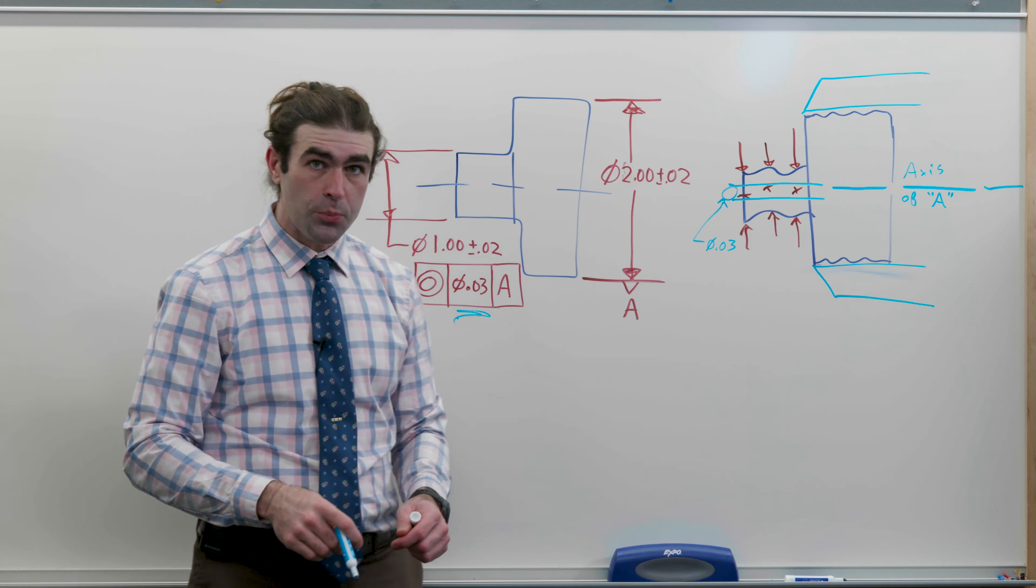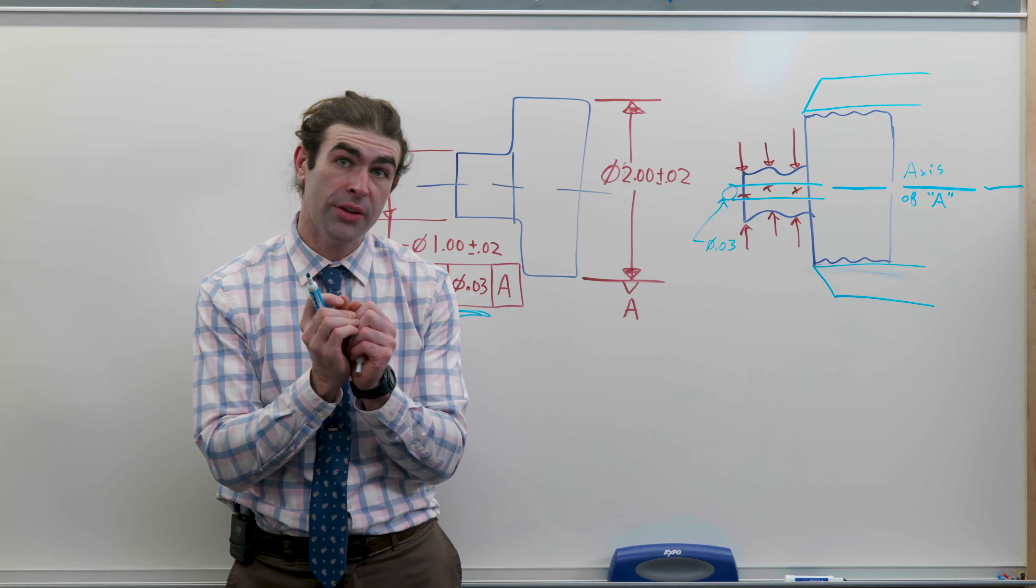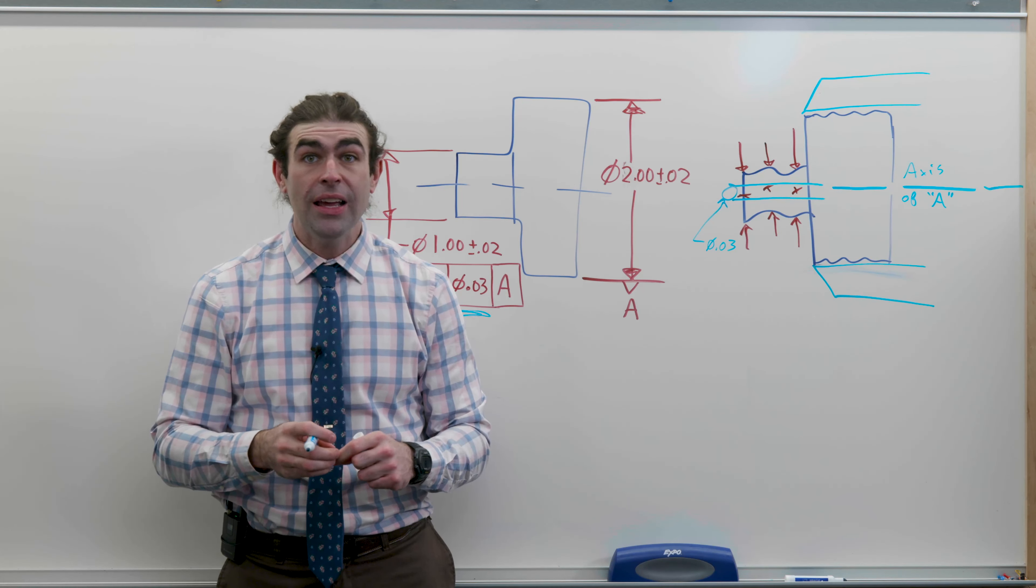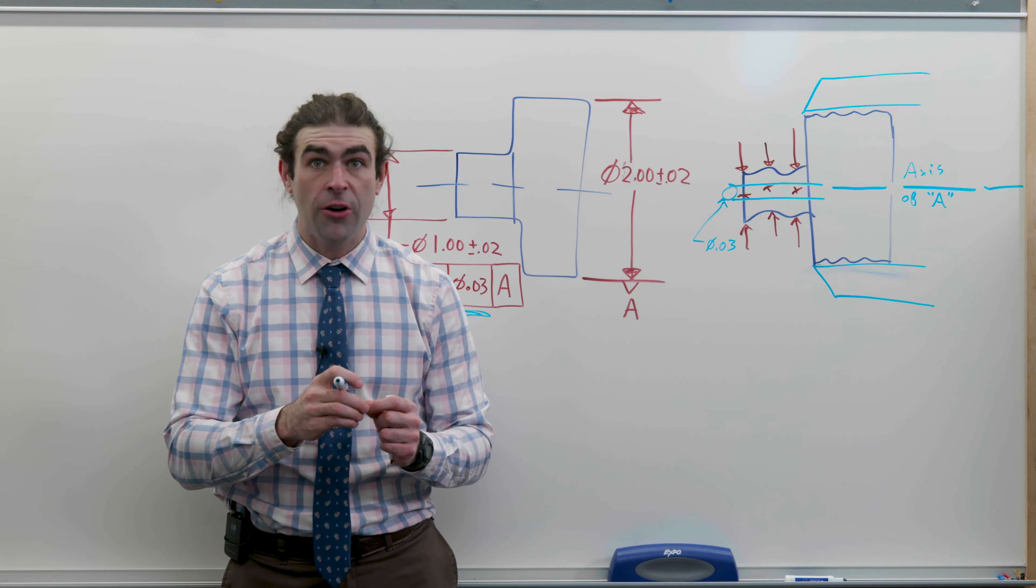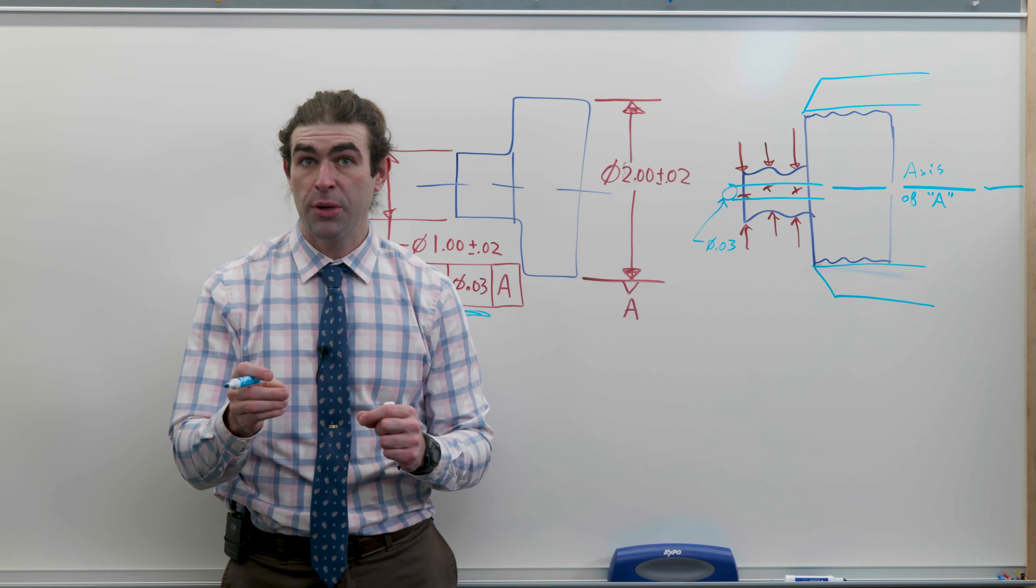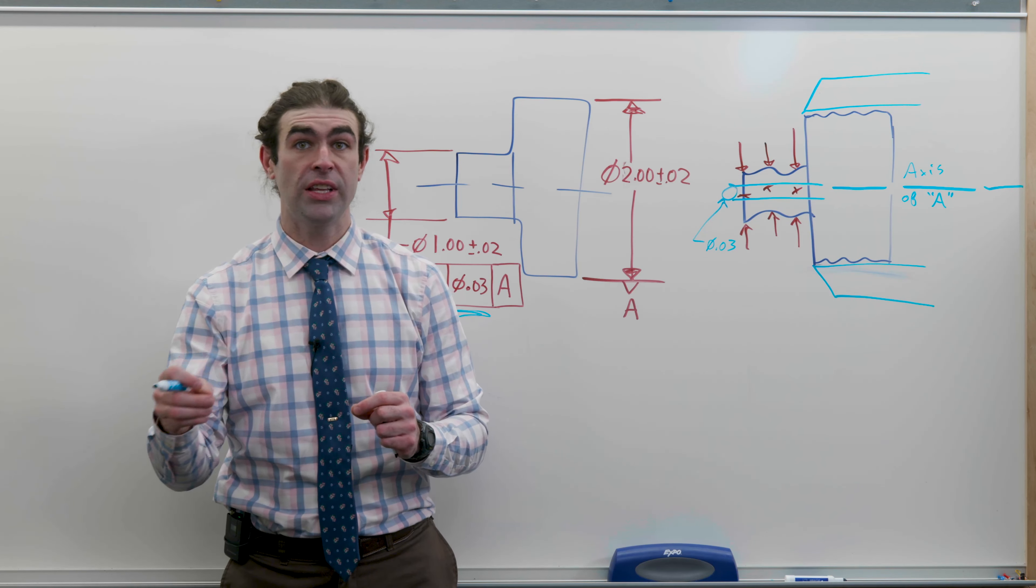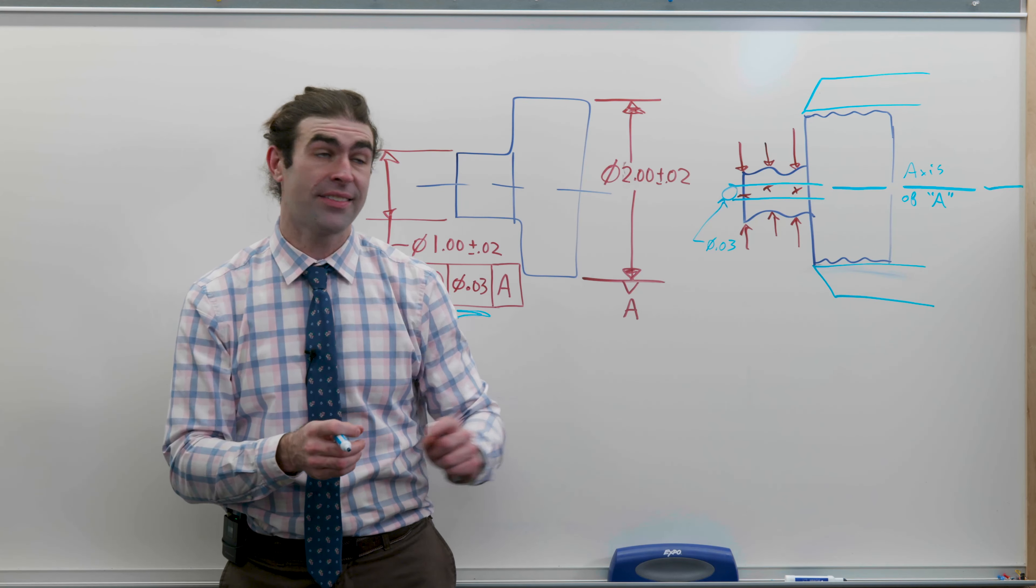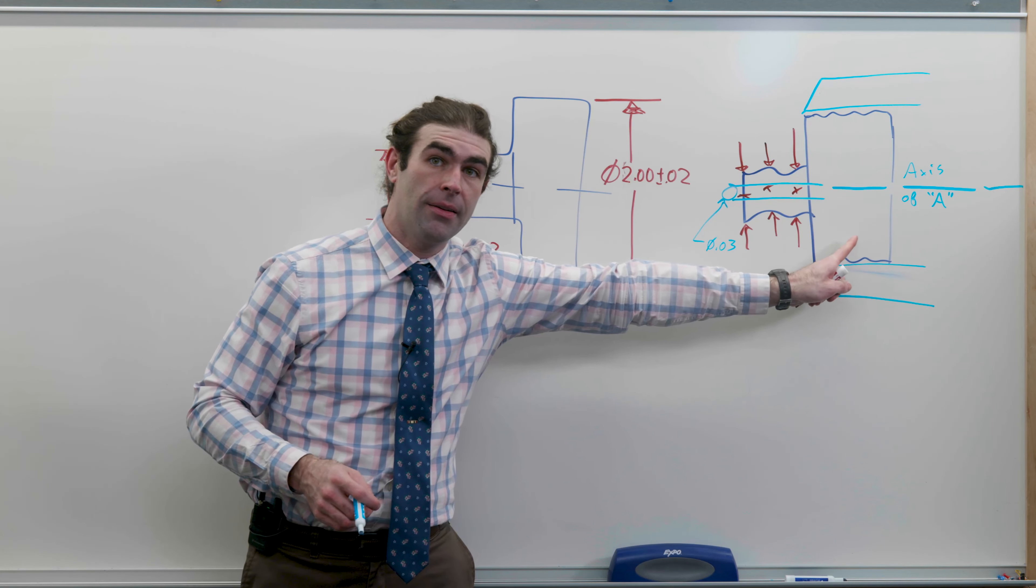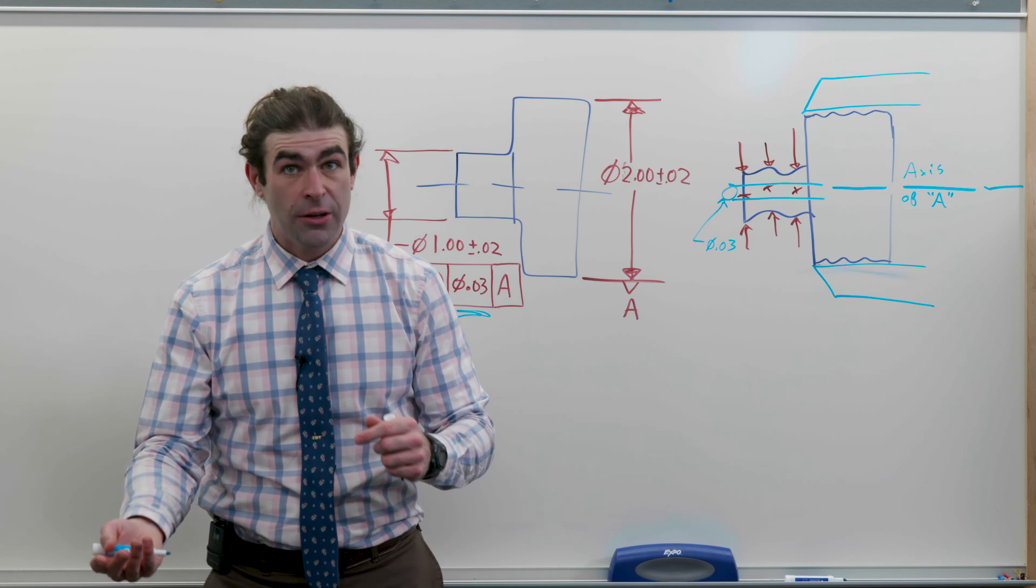In this case, a specified diameter of thirty thousandths. You could also think of it as: are any of the points, the derived median points you measured, more than fifteen thousandths away from the axis of datum A? That's how it would be inspected.